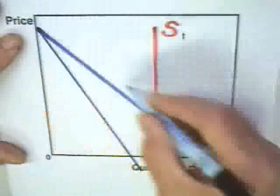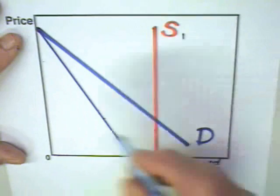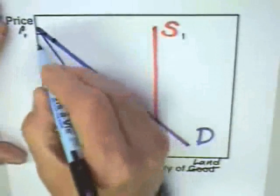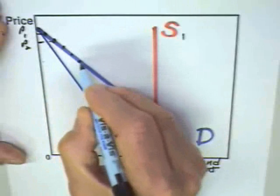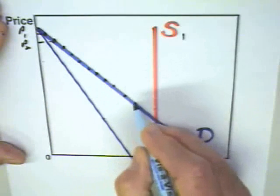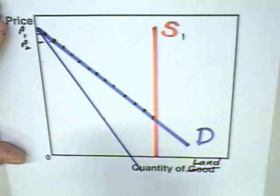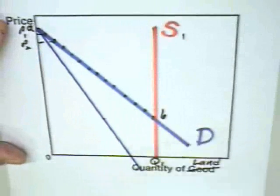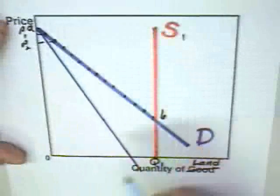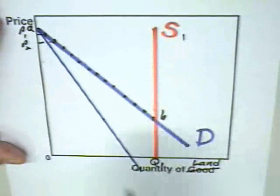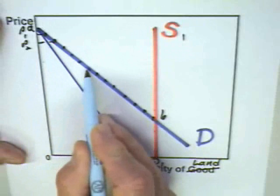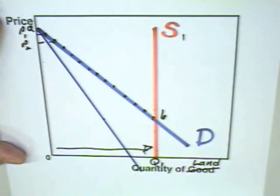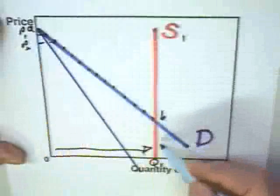Now one might think that the monopolist would engage in price discrimination. That is, it could sell the first unit of land at a price of P1, the second unit at a price of P2, and a third and fourth and on down this demand curve. You might think the monopolist could then acquire revenues equal to zero A B Q1, which would be equal to the area underneath the demand curve. It would be equal to that if the monopolist could charge differential prices, because if you add up the individual prices charged for each one of these units, they basically will add to the area of this figure.